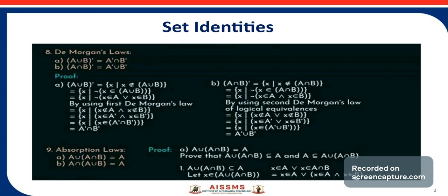By using the second De Morgan's law, we can write X belongs to A complement or X belongs to B complement. So X belongs to A complement union B complement. Therefore, (A intersection B) complement is equal to A complement union B complement.